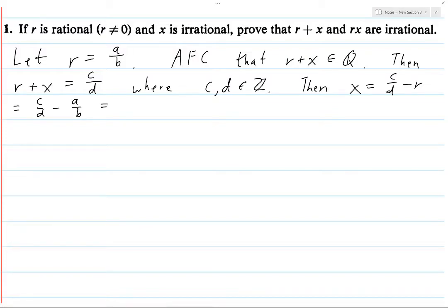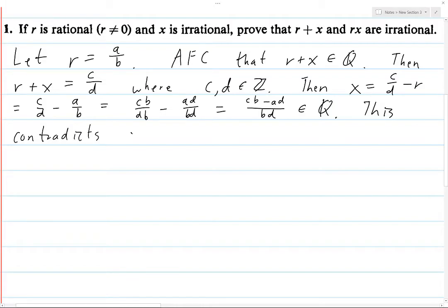let's write this difference as a fraction if we can. And to do that, we need like denominators. So we take the first fraction and we write it as CB over DB. And the second one, we do AD over BD. And so then this is just CB minus AD over BD. Which this is a fraction and both the numerator and denominator are integers. And so this is a rational number.